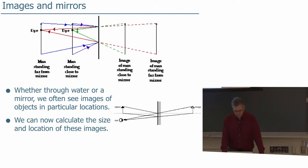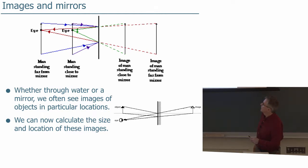Now that's true of other systems as well. Whether you're looking through water or a mirror, you see images of objects in particular locations. So here we have an object that you're looking at through a mirror. It appears to be over here—that's the image of that object.